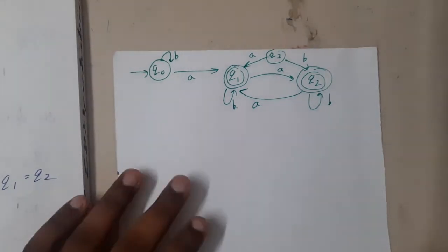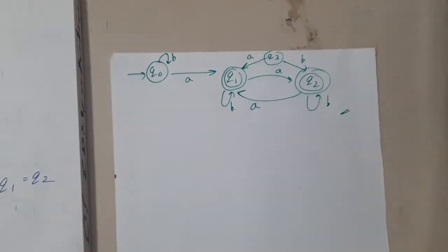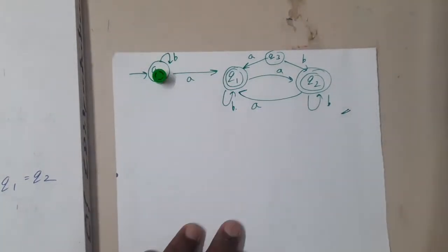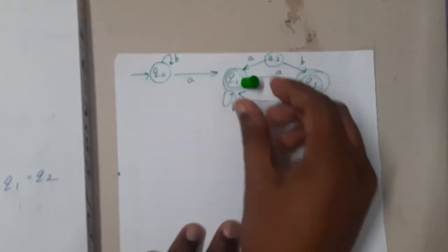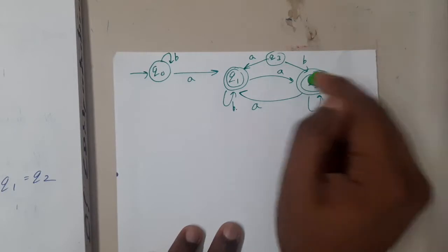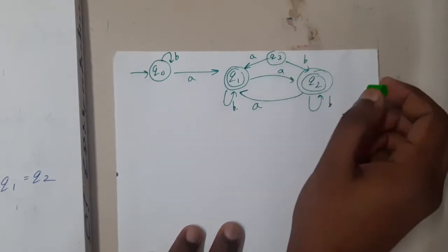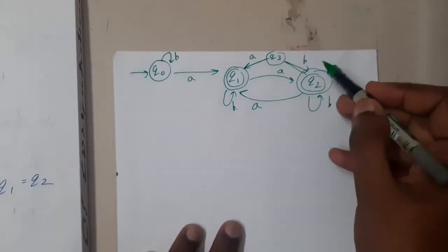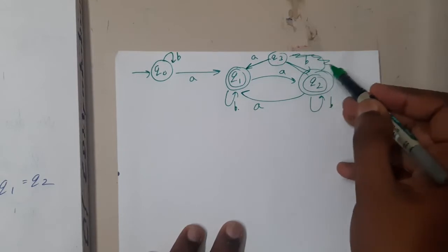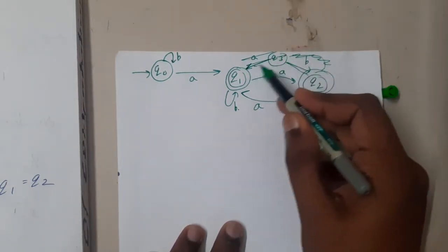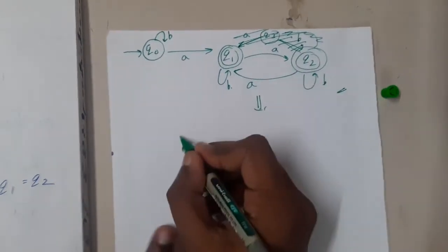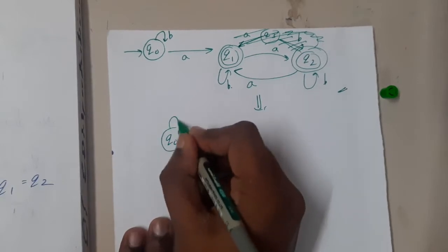The first thing you need to observe is: is there any unreachable state? An unreachable state is one you can never reach from the start. Starting here, I can go to q1; from q1 I can go to q2. But can I go to q3 in any way? The arrows on q3 are all outwards — there are no arrows towards it — meaning we can never reach q3. So if we can't reach it, why is it in the diagram? Let us remove it.